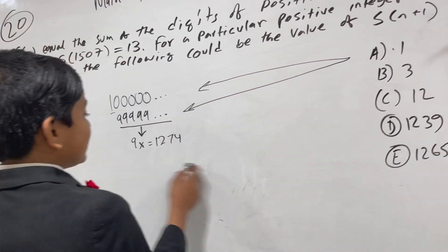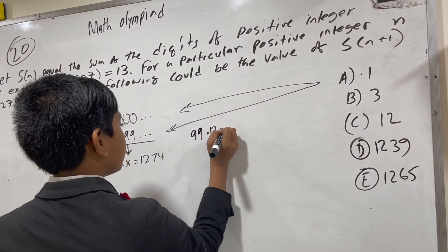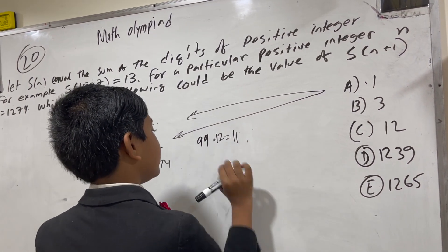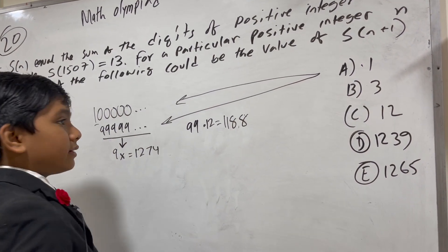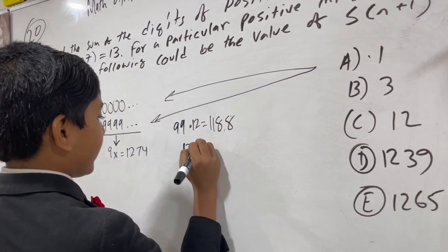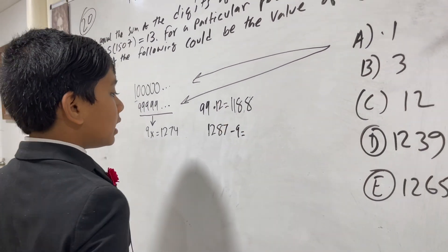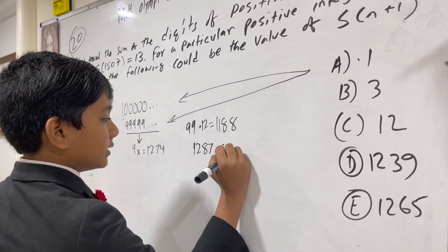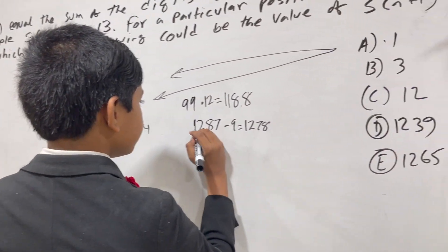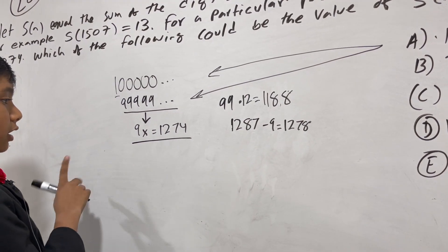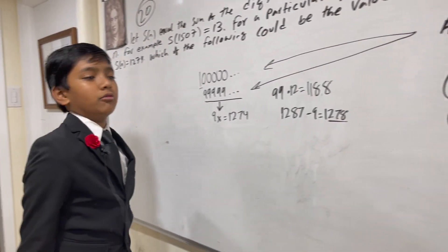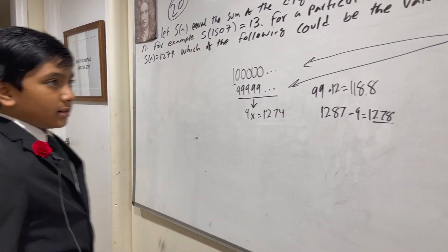Now if A was correct, this should have an integer solution. But does it? 99 × 12 = 1188, and adding one more 99 gives 1287. So the nearest multiple of 9 to 1274 is 1278, which is 4 away, not a multiple of 9 away. So it clearly does not have an integer solution. A is not the answer.